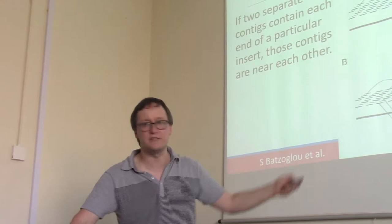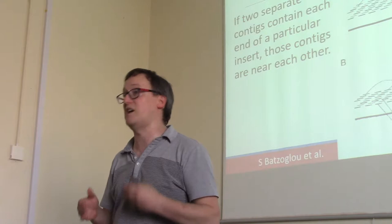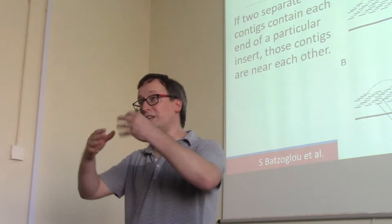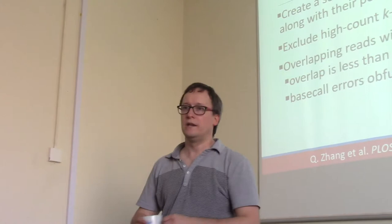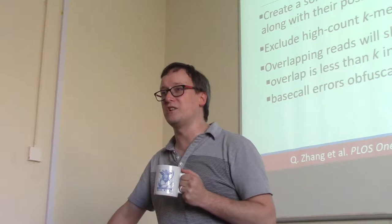Being able to rationalize all of this is one of the things that makes whole genome sequencing possible. By sequencing both ends of pieces of DNA, we're able to determine the relationships of neighboring contigs.